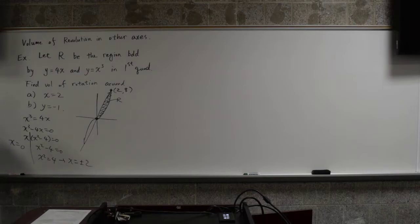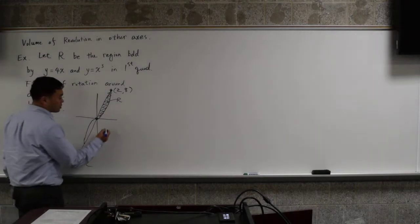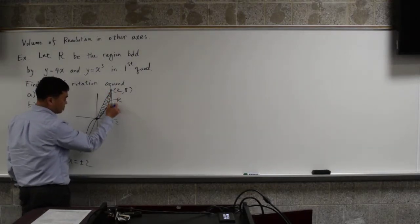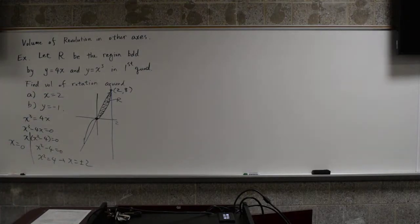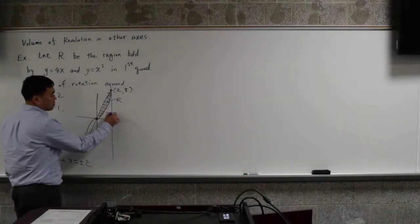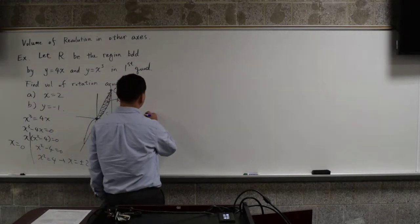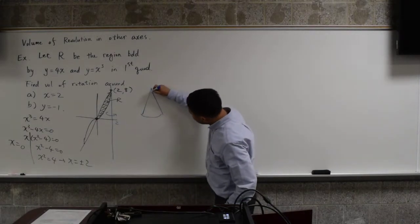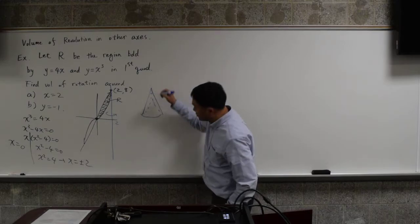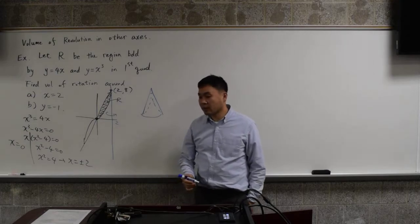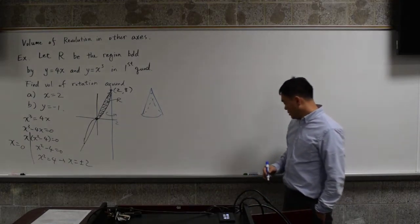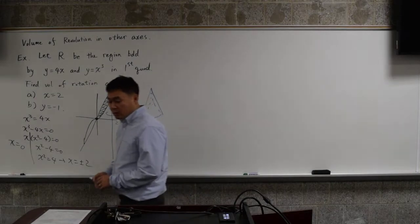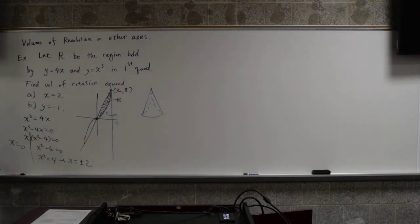Knowing this, now let's try to figure out how to solve the first one. We want to rotate around x equals 2. If you rotate around this, I guess the picture would be something like this, where in the interior it's hollowed in this form.